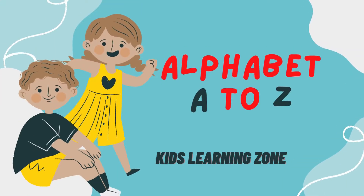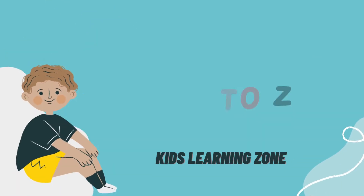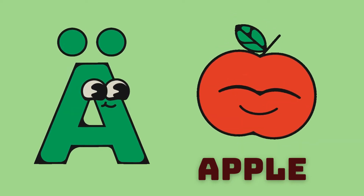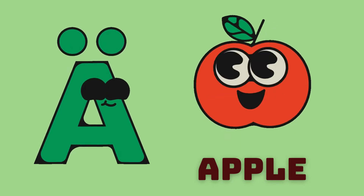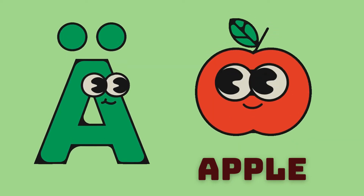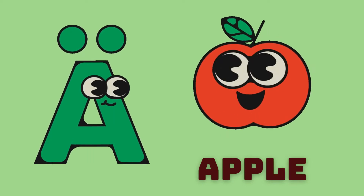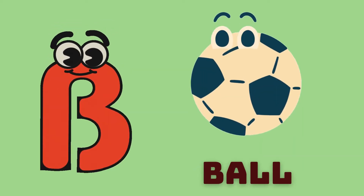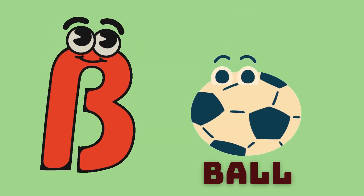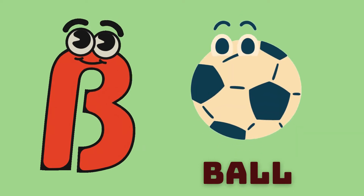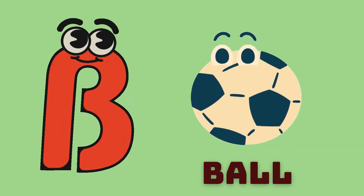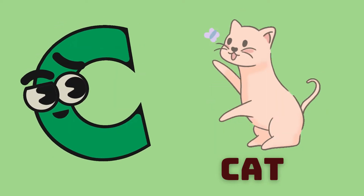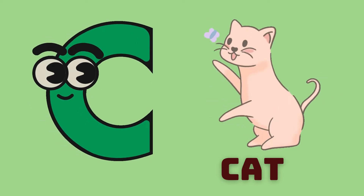Alphabet A to Z. A, A is for apple. B, B is for ball. C, C is for cat.